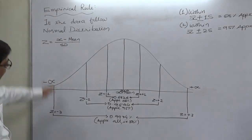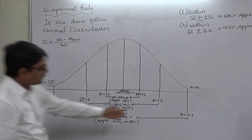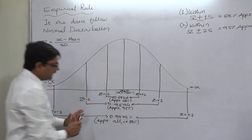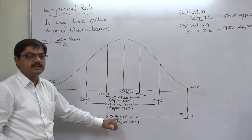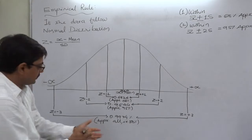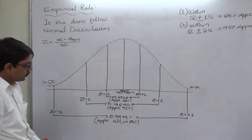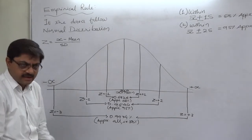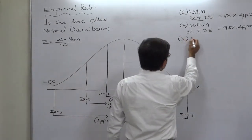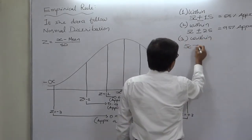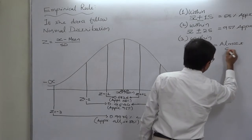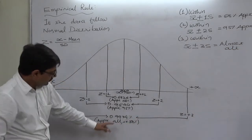Similarly, for Z = ±3, the area between Z=0 and Z=3 on either side is approximately 0.4987. The summation comes to 0.9974, so approximately all — or more or less 100% — of values fall within mean ± 3 standard deviations.